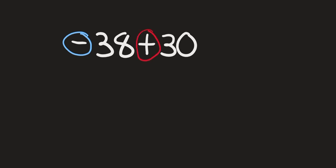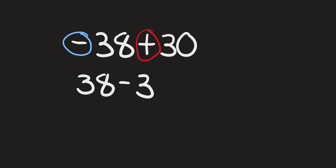Next we're going to have negative 38 plus 30. 38 has a negative sign in front and 30 has a positive sign in front. Since they have different signs, we subtract the bigger number by the smaller number — 38 minus 30 is 8 — and then keep the sign of the bigger number. 38 is negative, so our answer is negative 8.